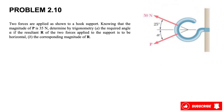Welcome back. We have another question from chapter two of the textbook Beer and Johnston. In this question we have two forces applying to a hook. We know that the magnitude of force P is 35 newtons, and we need to determine by trigonometry: (a) the required angle alpha if the resultant of the two forces applied to the support is to be horizontal, and (b) the magnitude of the resultant R.